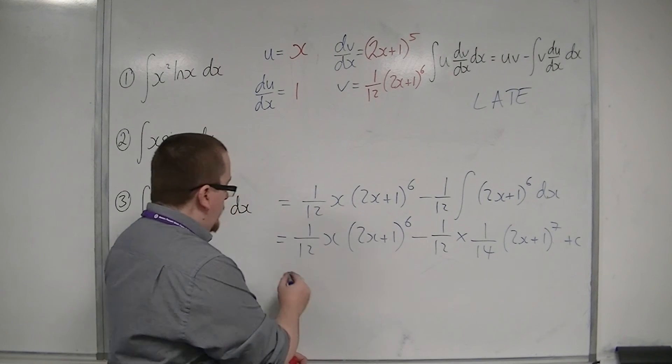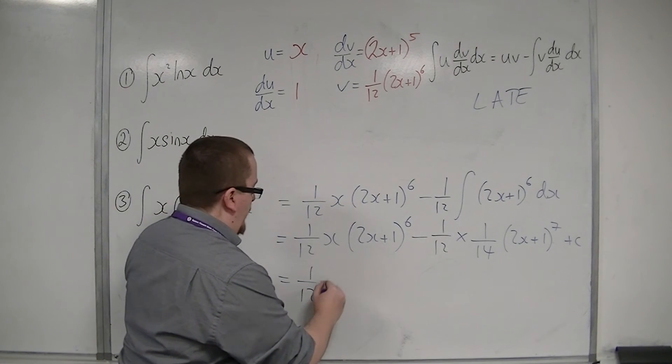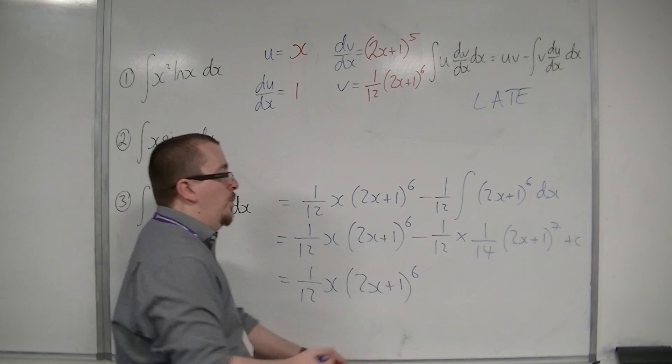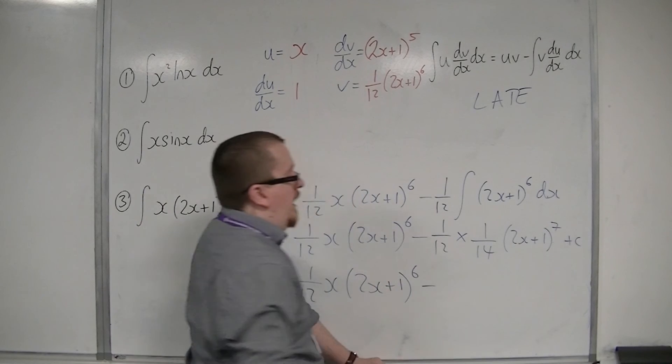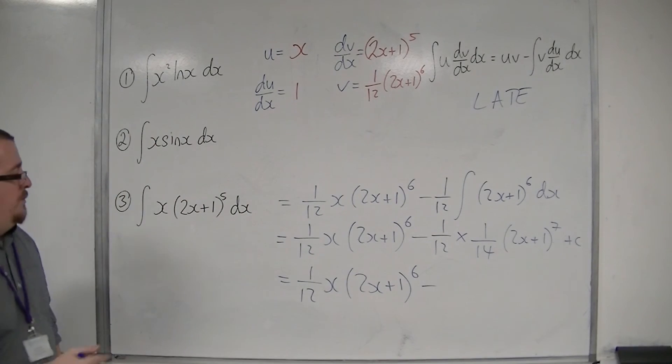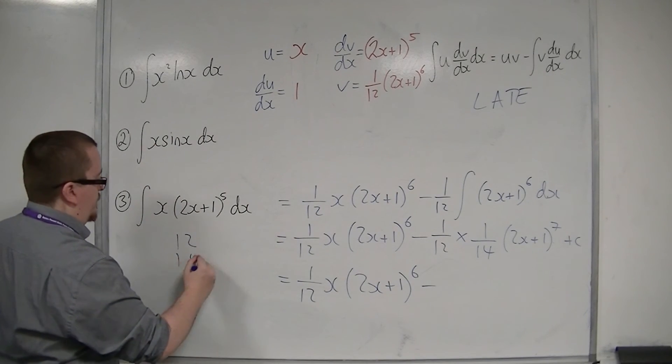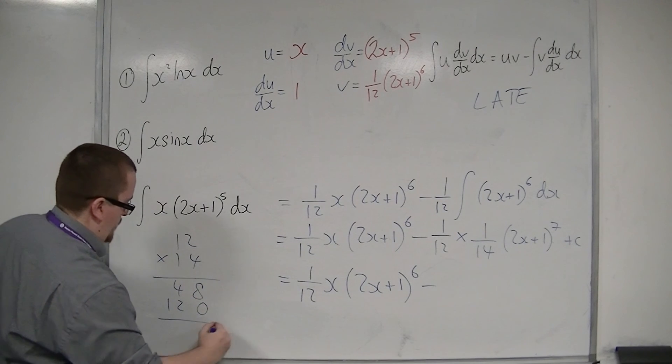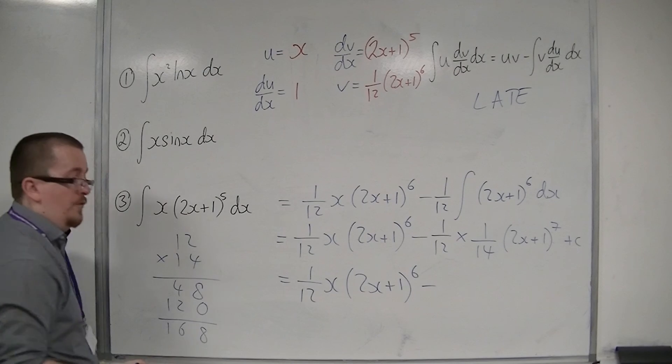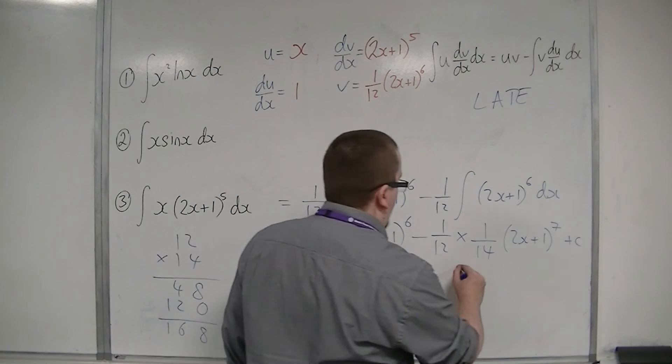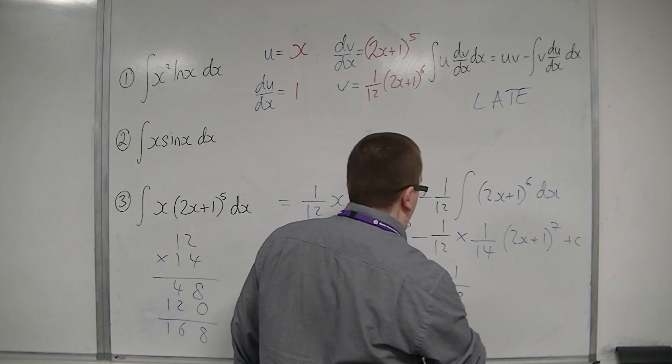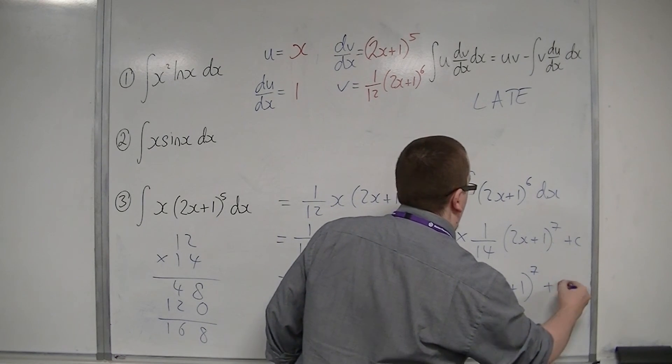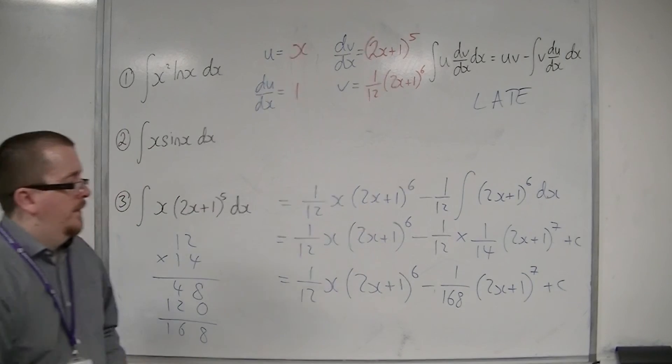So we've got 1 over 12x, 2x plus 1 to the power of 6. I've got minus 1 12 times 1 14th, so 12 times 14, 168, so minus 1 over 168, 2x plus 1 to the power of 7, plus your constant c. And that is the integral of the original problem.